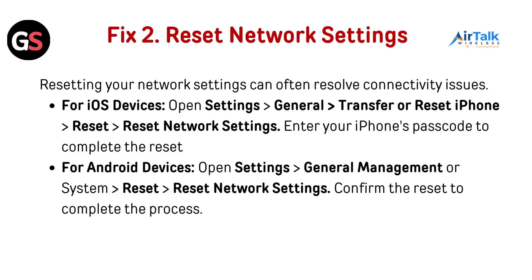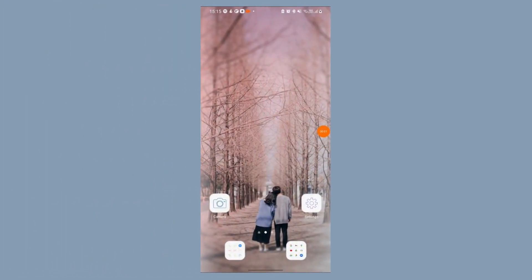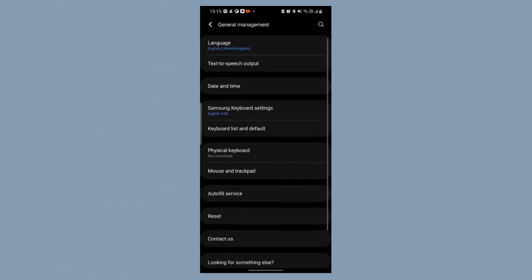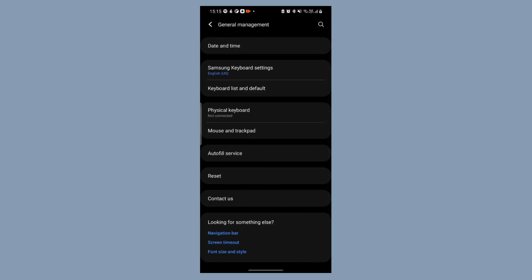Fix 2: Reset network settings. Resetting your network settings can often resolve connectivity issues. For iOS devices, open Settings, then General, then Transfer or Reset iPhone, then go to Reset, then Reset Network Settings. Enter your iPhone's passcode to complete the reset. For Android devices, open Settings, go to General Management or System, then Reset, then Reset Network Settings. Confirm the reset to complete the process.